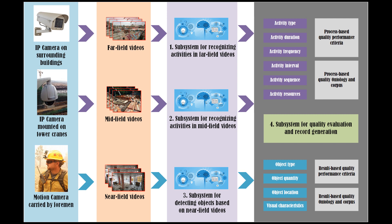Result-based quality control detects if there are visual defects in the activity results, implemented through visual object detection. Site videos are categorized into three types according to their resolutions: far-field, mid-field, and near-field.